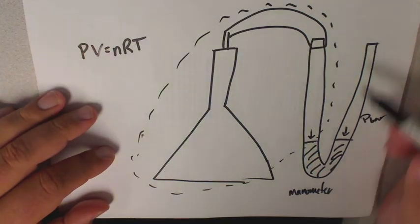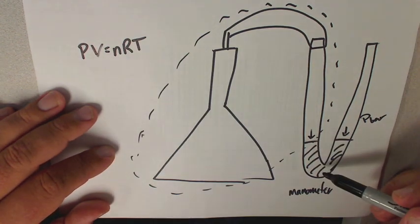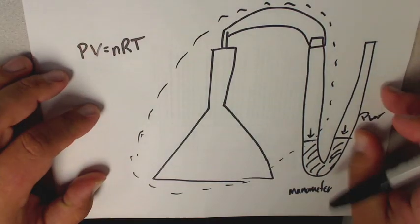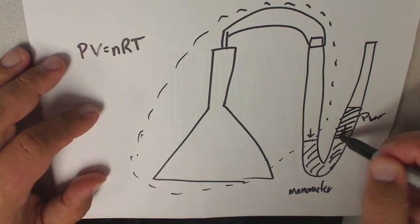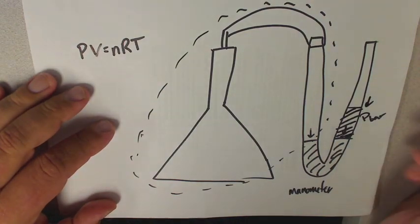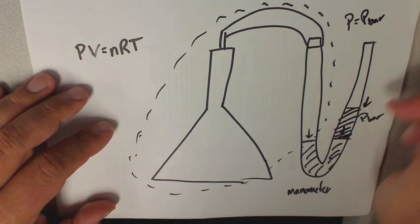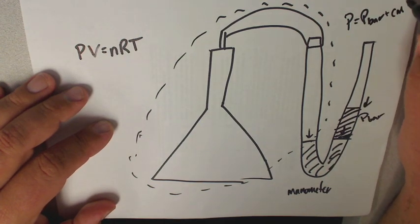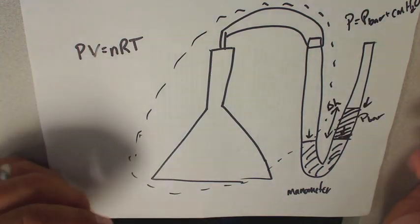As the volume expands, it's going to push the water down. If the pressure inside equals the pressure outside, the levels will be equal. But if the pressure goes up, that means it's pushing more force, so the total pressure in that situation would be atmospheric pressure plus the extra centimeters of water you're getting from the difference - the delta h. So that means there is more pressure.